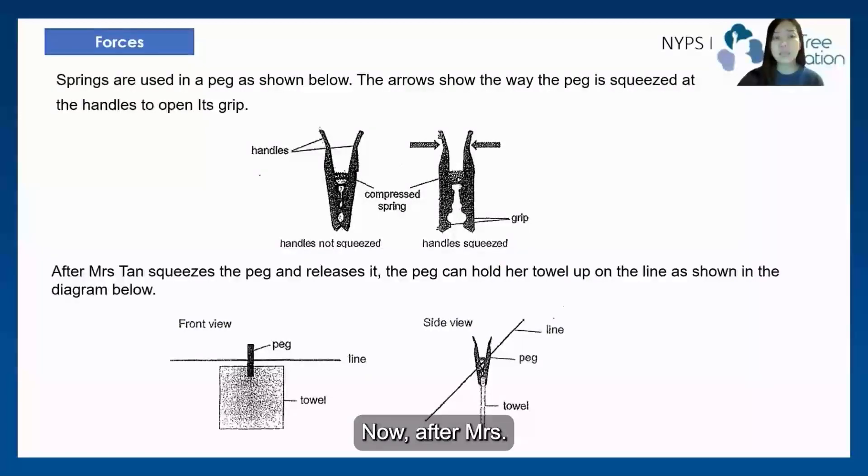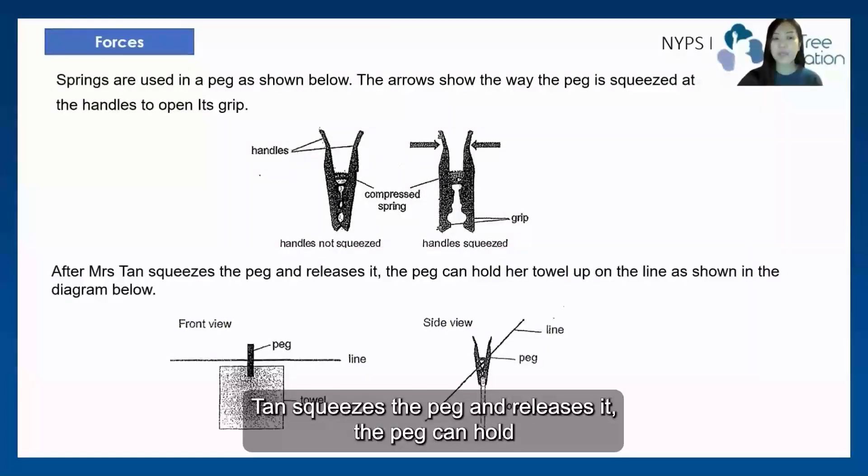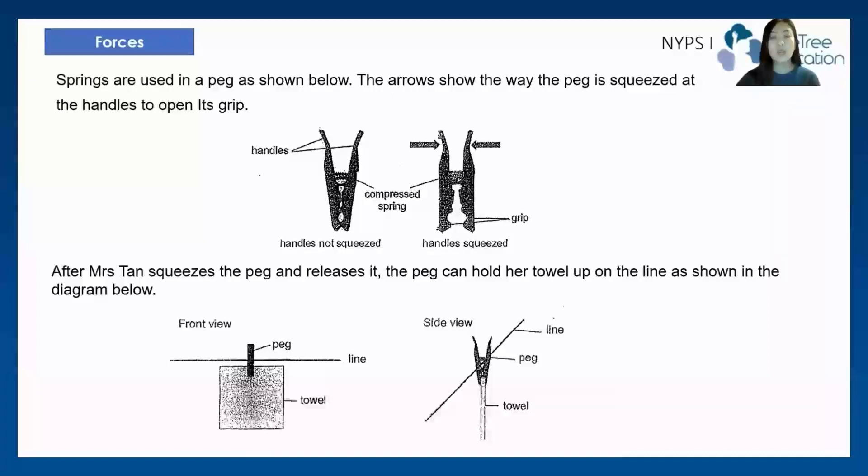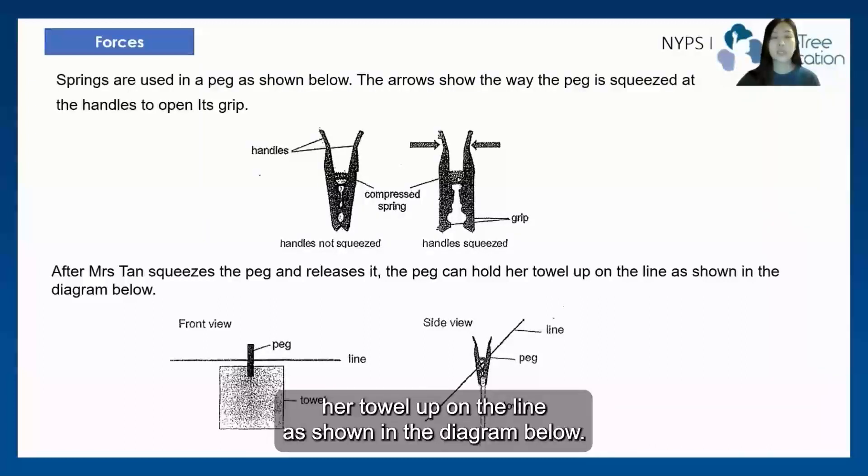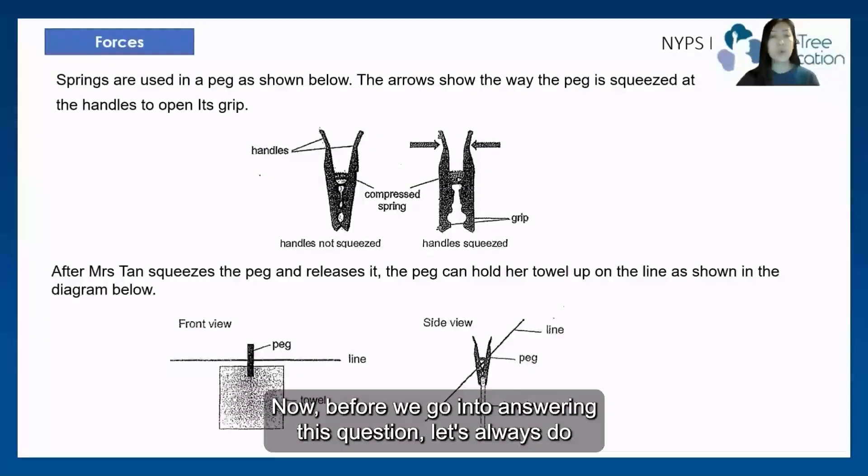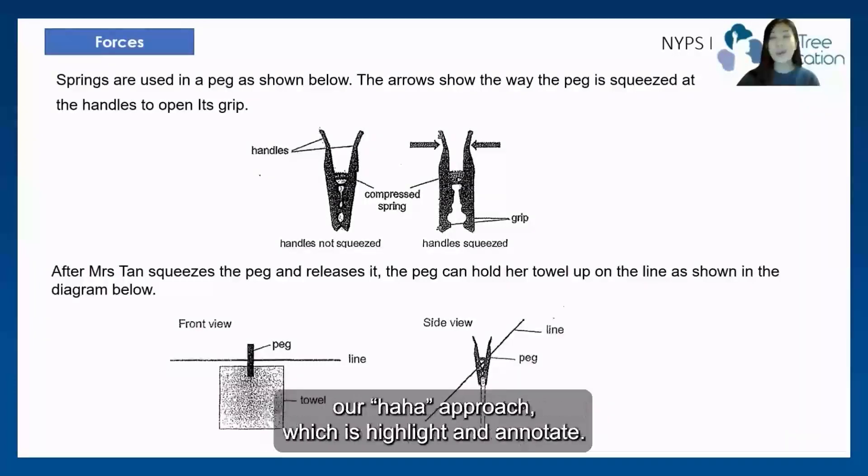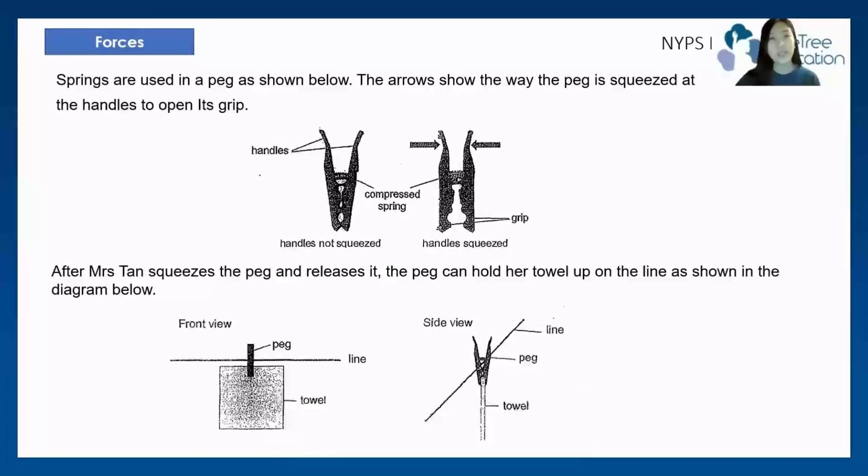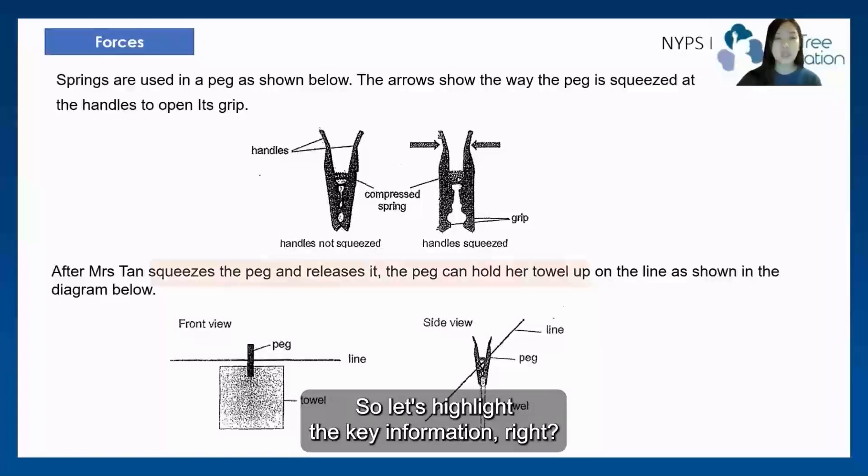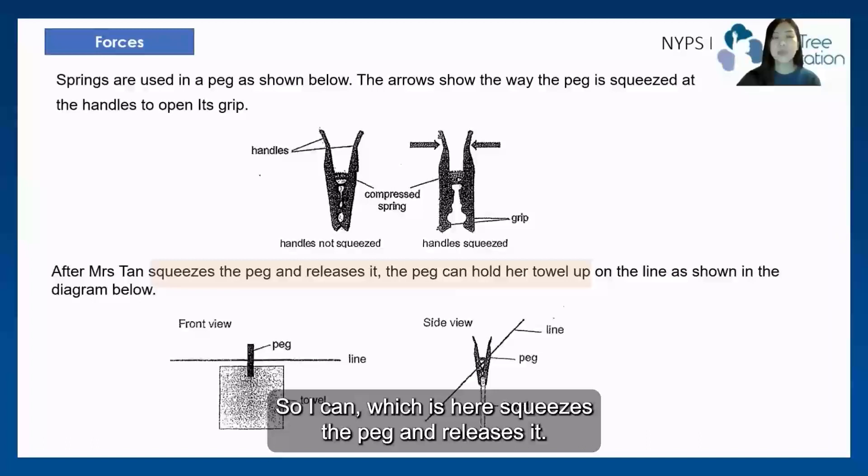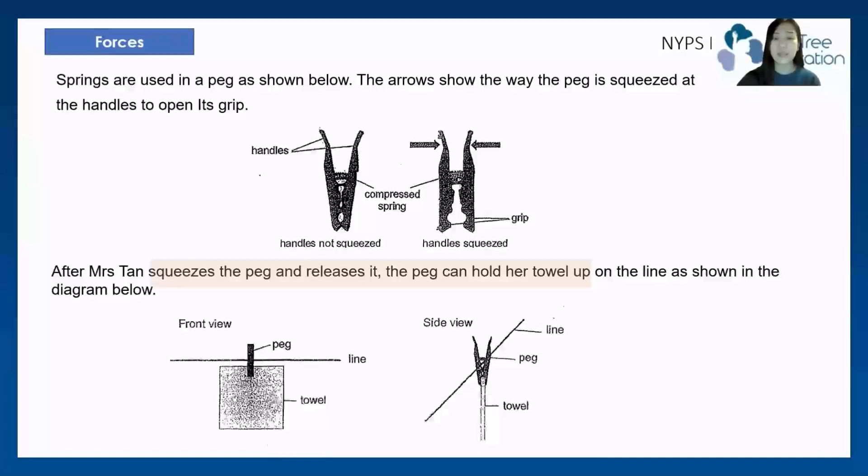Now, after Mrs. Tan squeezes the peg and releases it, the peg can hold her towel up on the line as shown in the diagram below. Now, before we go into answering this question, let's always do our ha-ha approach, which is highlight and annotate. So let's highlight the key information, which is here, squeezes the peg and releases it.